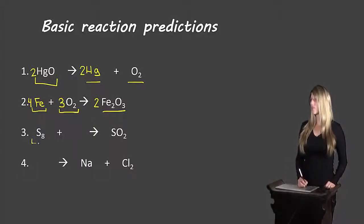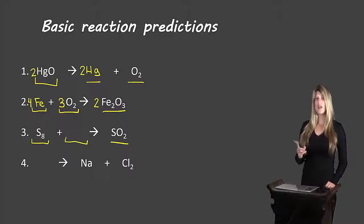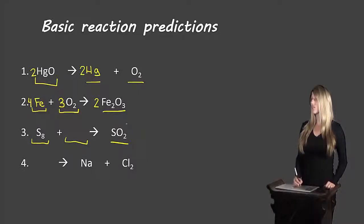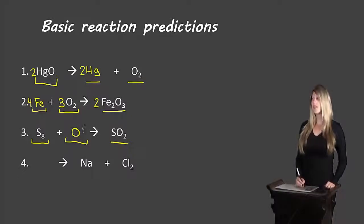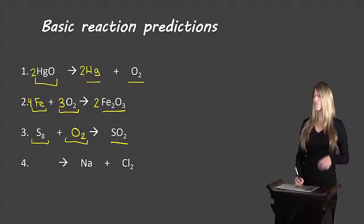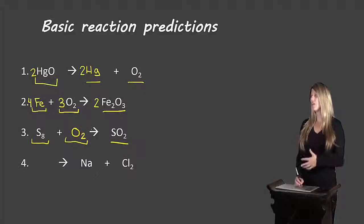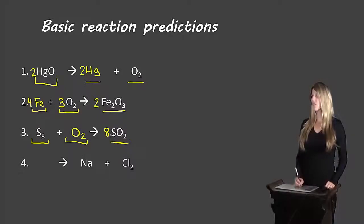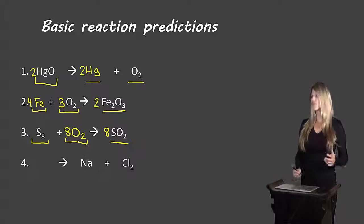The next example also has two reactants and one single product, confirming it's a synthesis reaction. We have sulfur and oxygen on the right, but only sulfur on the left, so we need to add oxygen. Since oxygen is diatomic, we write O₂ with a subscript 2. To balance, we have eight sulfur on the left and one on the right, so we add a coefficient of 8 on the right. That gives us sixteen oxygen on the right (8 × 2), so we add a coefficient of 8 in front of O₂, giving sixteen oxygen on both sides.